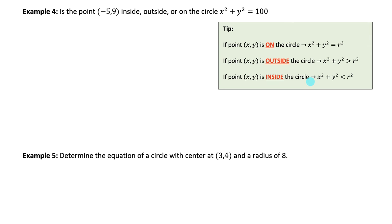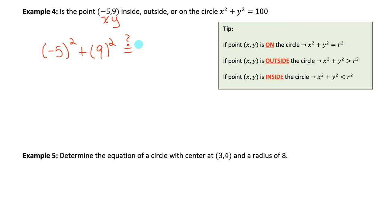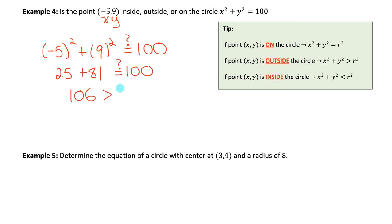Is the point (−5, 9) inside, outside, or on the circle x squared plus y squared equals 100? We substitute −5 and 9 for x and y and compare to 100. Negative 5 squared is 25, and 9 squared is 81. On the left we have 25 plus 81, which equals 106. Since 106 is greater than 100, the point (−5, 9) is outside the circle.